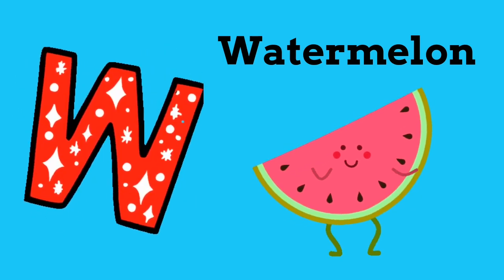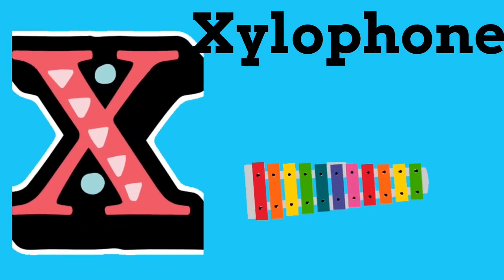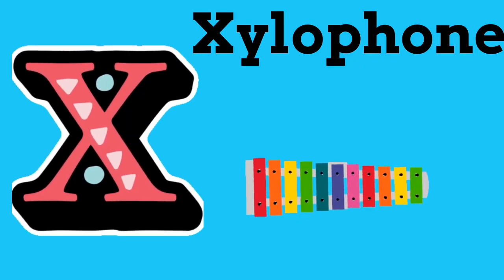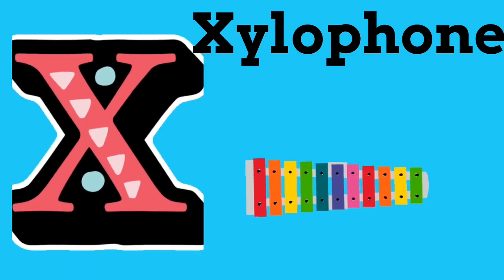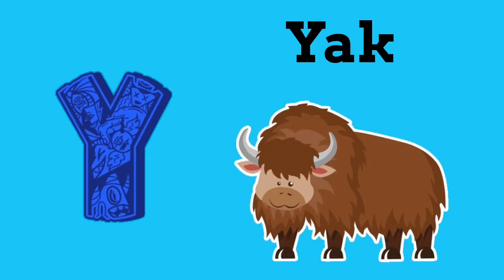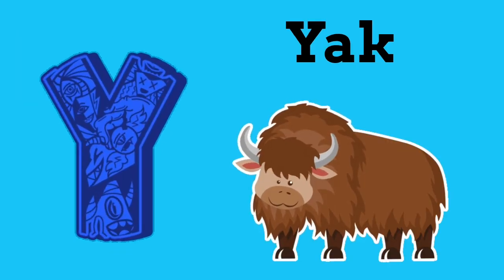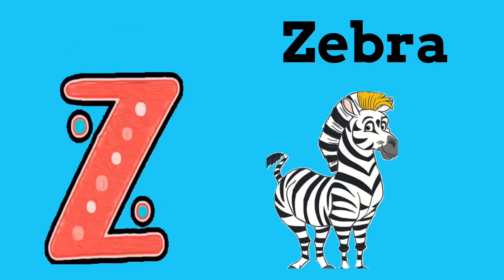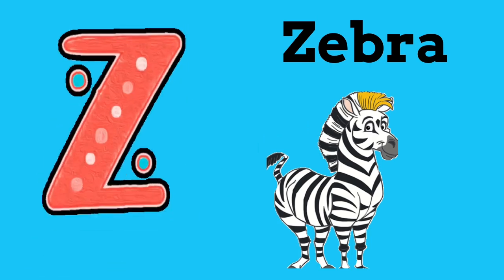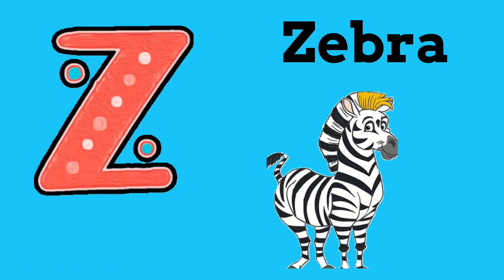W is for Watermelon. Watermelon. X is for Xylophone. Xylophone. Y is for Yak. Yak. And Z is for Zebra. Zebra.